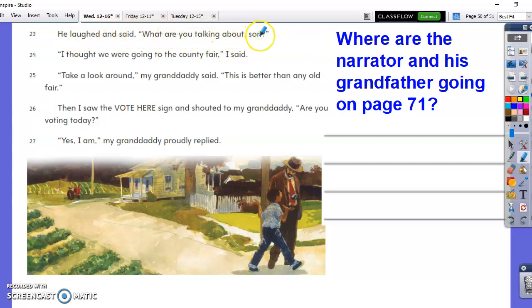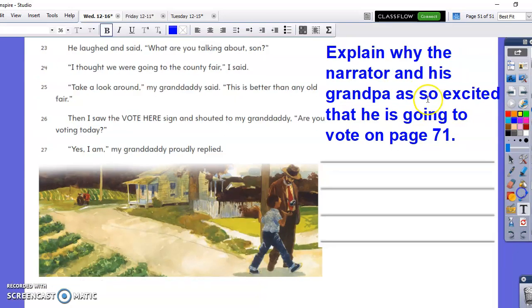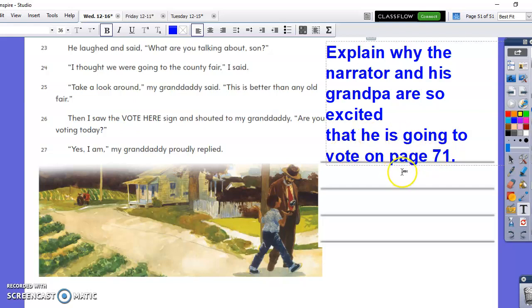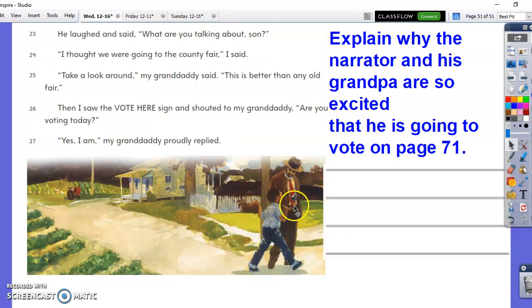He laughed and said, what are you talking about, son? I thought we were going to the county fair, I said. Take a look around, my granddaddy said. This is better than any old fair. Then I saw the vote here sign and shouted to my granddaddy. Are you voting today? Yes, I am, my granddaddy proudly replied. Where are the narrator and his grandfather going on page 71? And then again on the same page, explain why the narrator and his grandpa are so excited that he's going to vote on page 71. Why are the characters so excited? Why does he need to bring a camera?